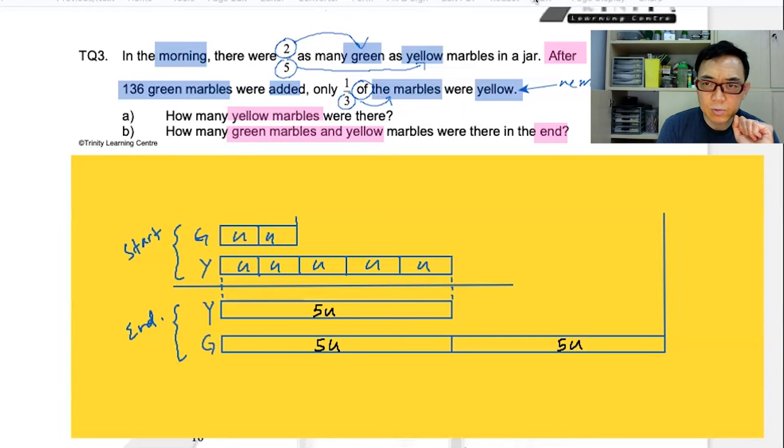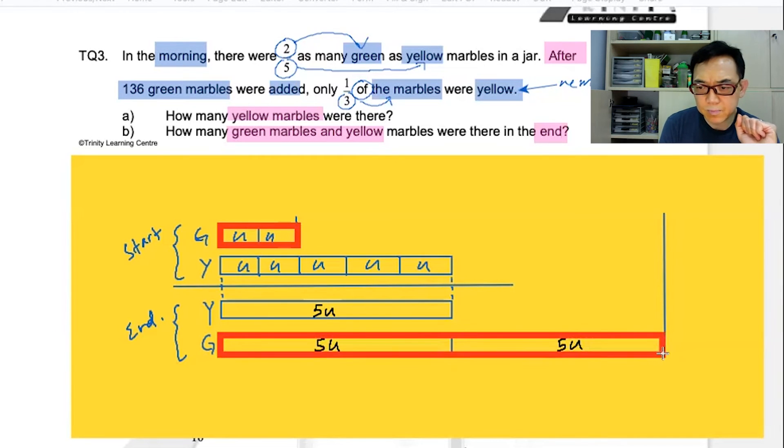This is the number of green at first. This is the number of green in the end. This is the number of green that was added.